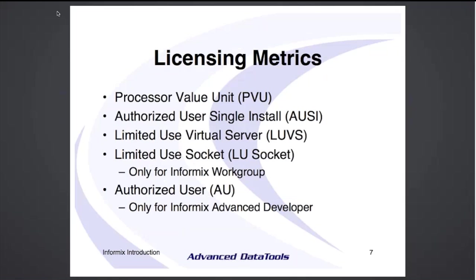The way you license Informix, there are a number of options. One is by Processor Value Unit — you tell IBM what CPU you're using, they assign a processor value unit, and you can run as many users as you want. There's also an authorized single user install where you say 'I have 20 users, I need 20 licenses.' The single user install doesn't work when attached to a web server. There's also licensing for virtual servers. Several options here.